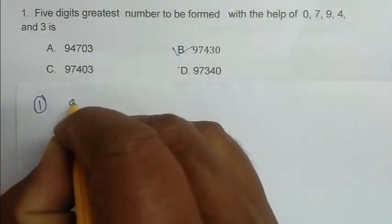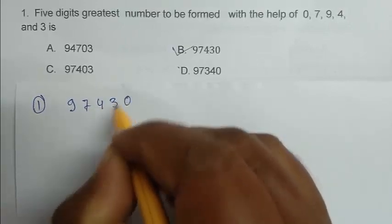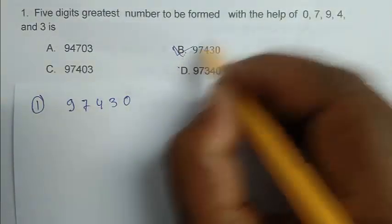So 1, 9, 7, after that 4, after that 3, 0. So B is the right answer.